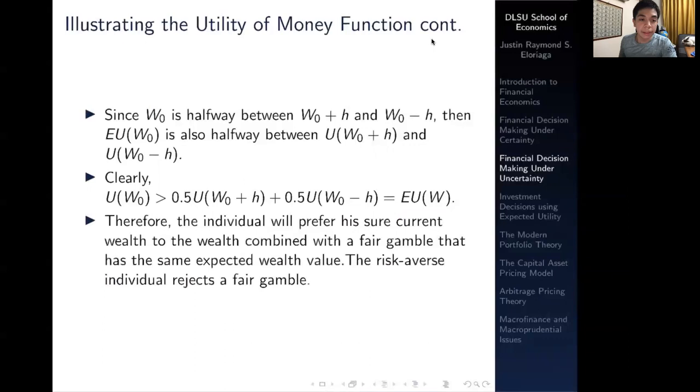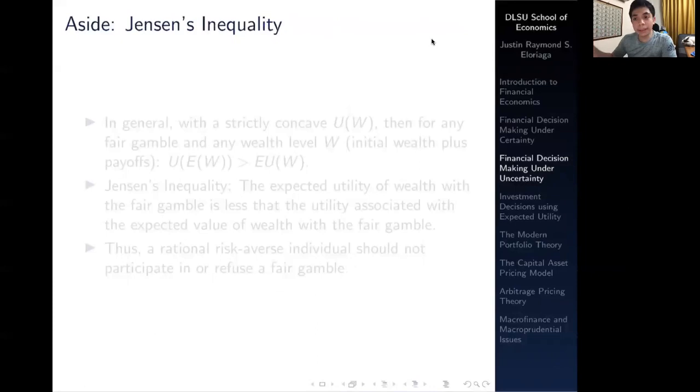Therefore, the individual will prefer his sure current wealth to the wealth combined with a fair gamble that has the same expected wealth value. This just means that the risk averse individual will generally reject a fair gamble. If an individual were presented with the option to engage in a fair gamble, he or she would likely reject it and prefer having a certain wealth.